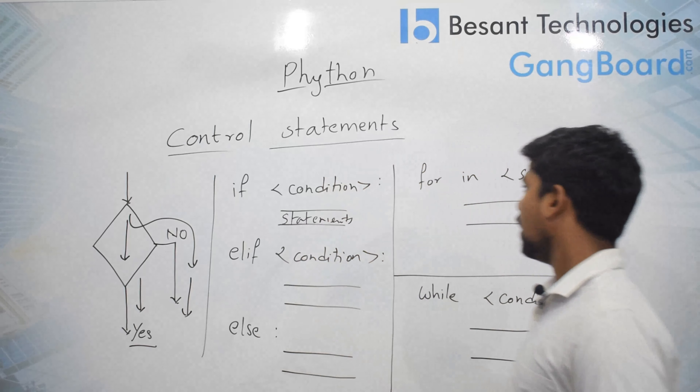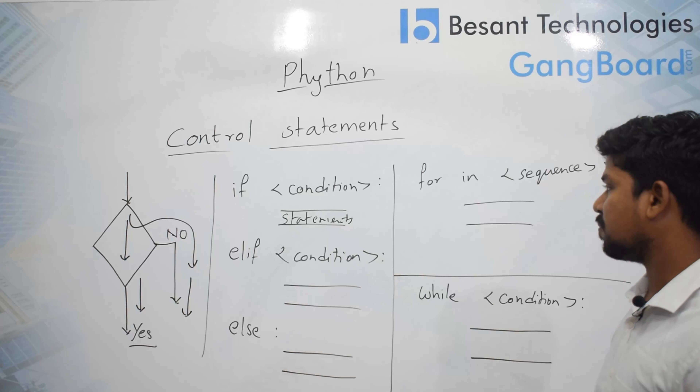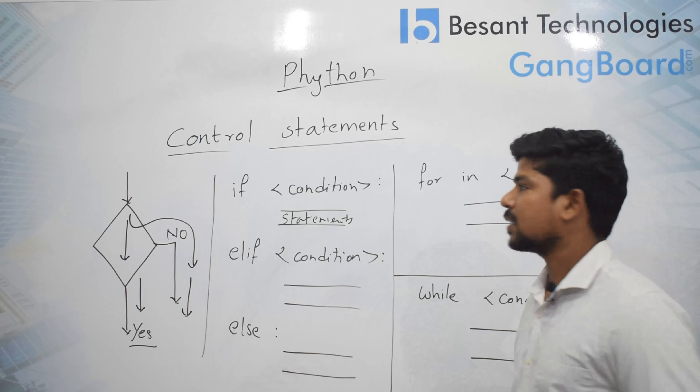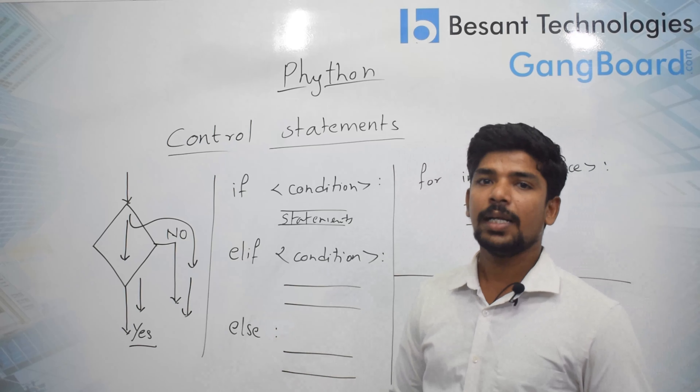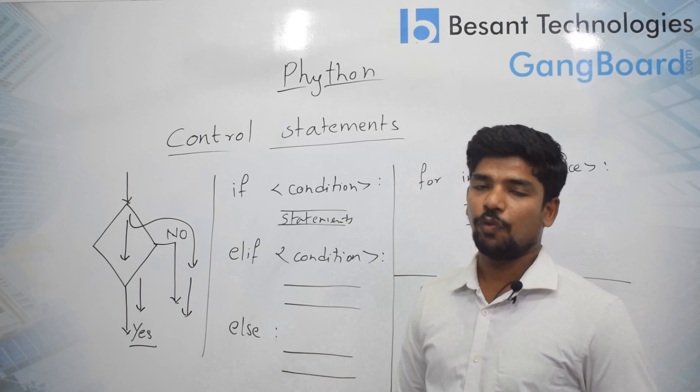We have three types: one is if, another is for, and another is while. Let us check the syntax. The syntax for if is: if condition: followed by an indent, which can be four spaces or two spaces. Python versions earlier than 3.6 use four spaces, while later versions use two spaces. Here I have used the four-space industrial standard.